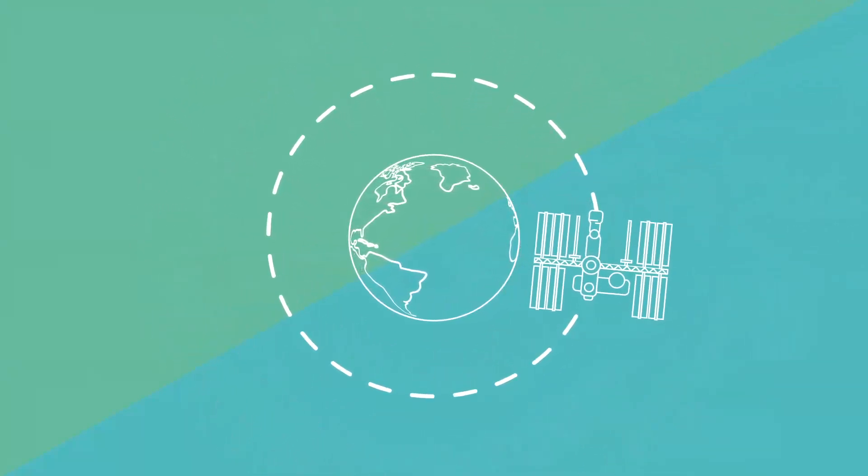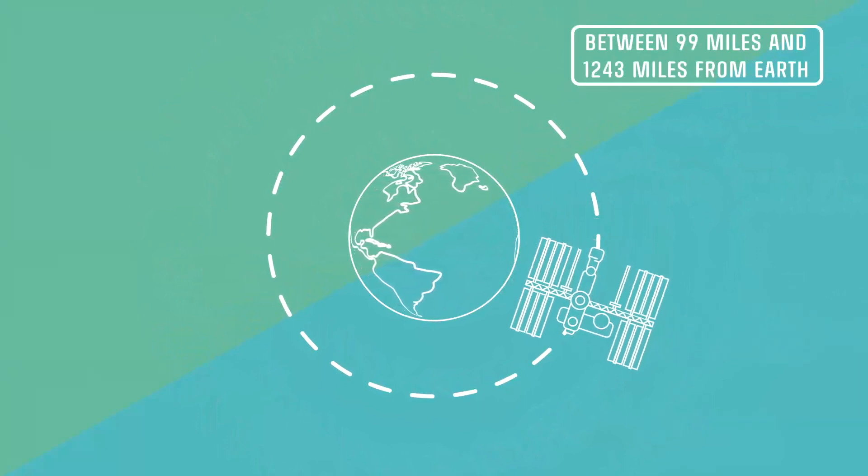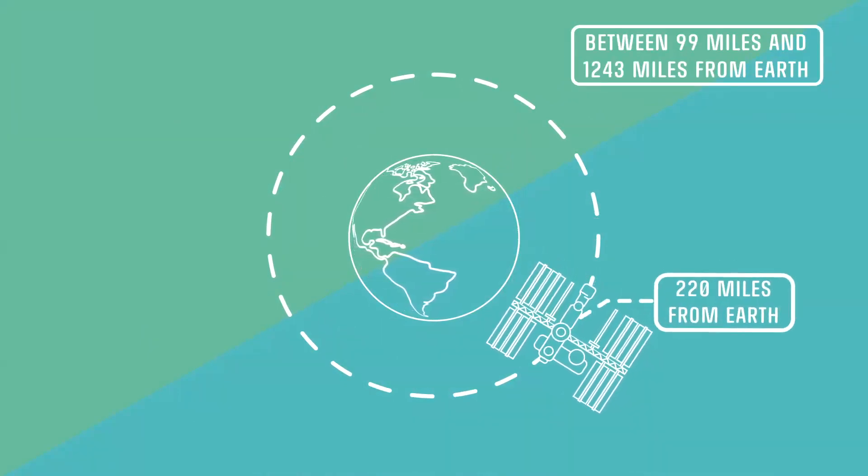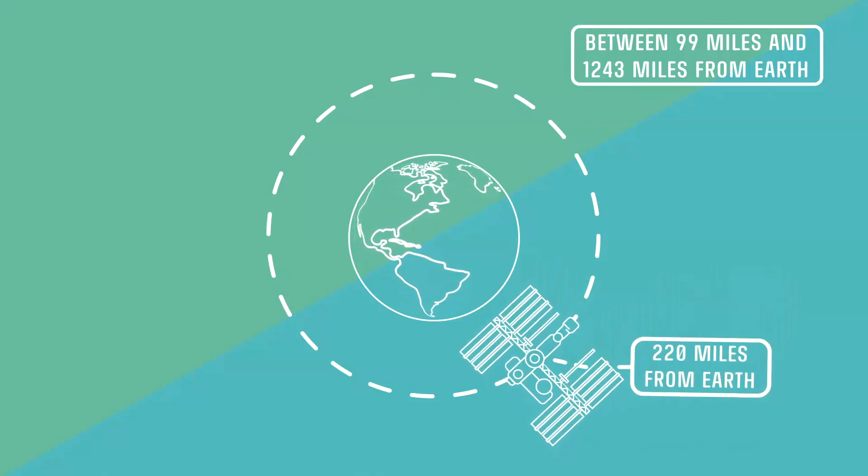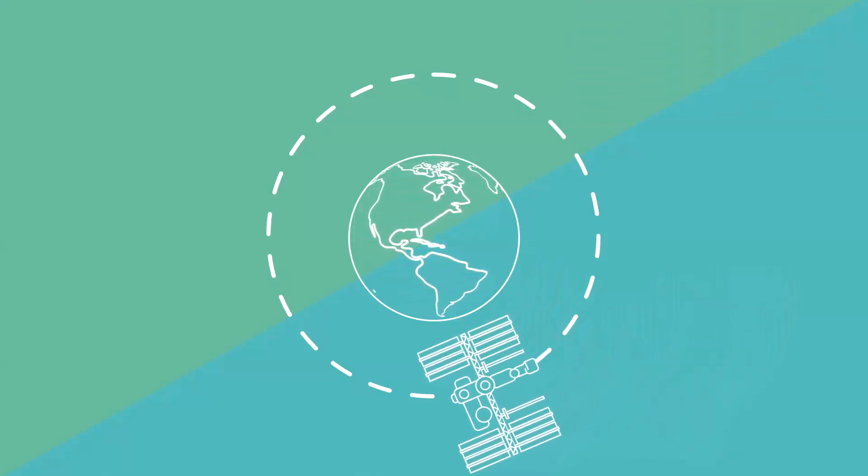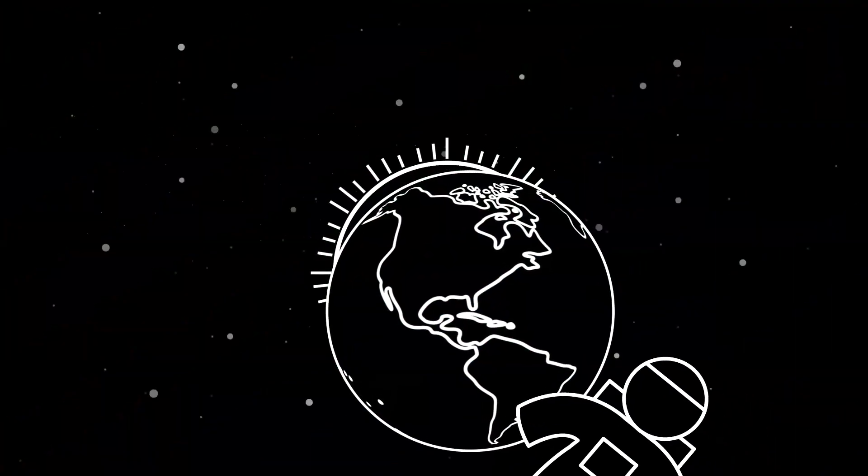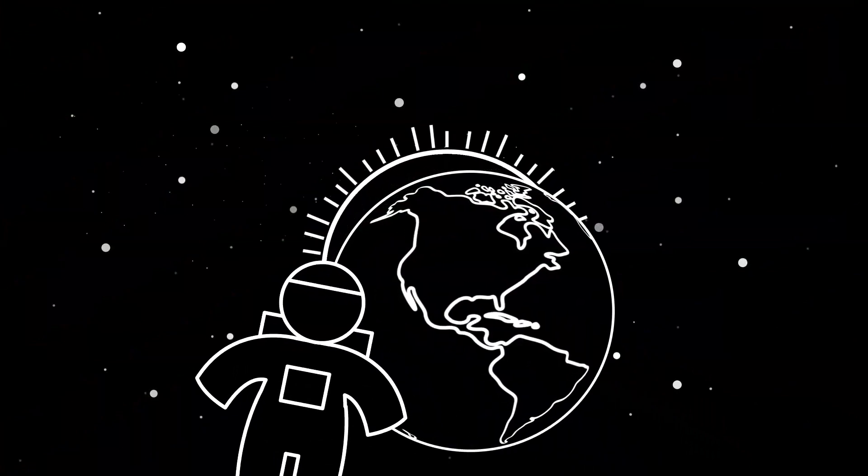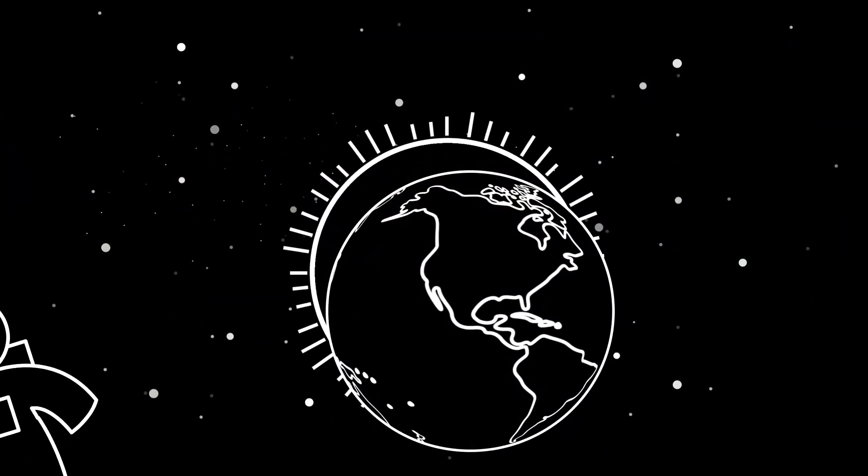All current manned spaceflight is in the first one. The ISS, for example, is around 220 miles away from Earth and makes one full orbit in just 90 minutes. The astronauts see 16 sunrises and sunsets every day. Awesome!